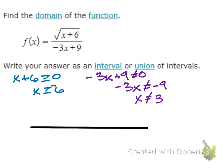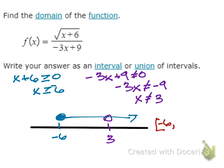Let's put that on a number line. At positive 3, I'm going to have an open circle because we cannot have that value. Then at negative 6, there's a closed circle going to the right because it's greater than. So my interval is negative 6 to 3, union 3 to infinity. We had to break it at 3 because of the open circle.